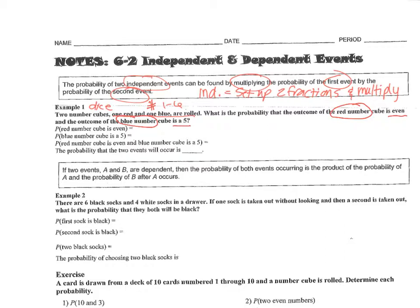Don't be tripped up that they're giving you two different scenarios — we're going to do it one at a time. The probability that the red number cube is even: our dice has one through six, so three even numbers out of six, which is three over six or one half. Now ignoring the red, the probability that the blue number cube rolls a five is one over six.